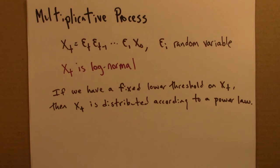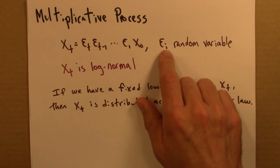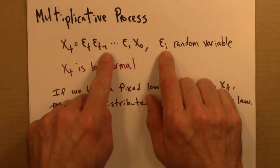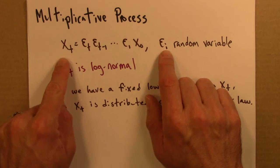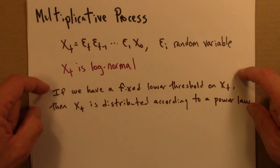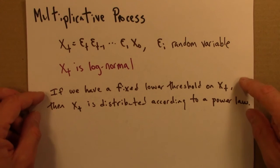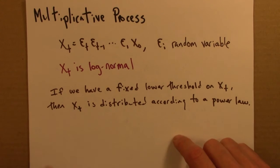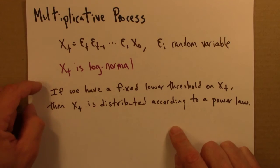If we have some fixed lower threshold on X_T, then X_T is distributed according to a power law. So the picture here is there's some minimum income you can't fall below or maybe some minimum size for a city. The mathematics to justify this is a little bit involved, but let me just say a few words to give a little bit of intuition.